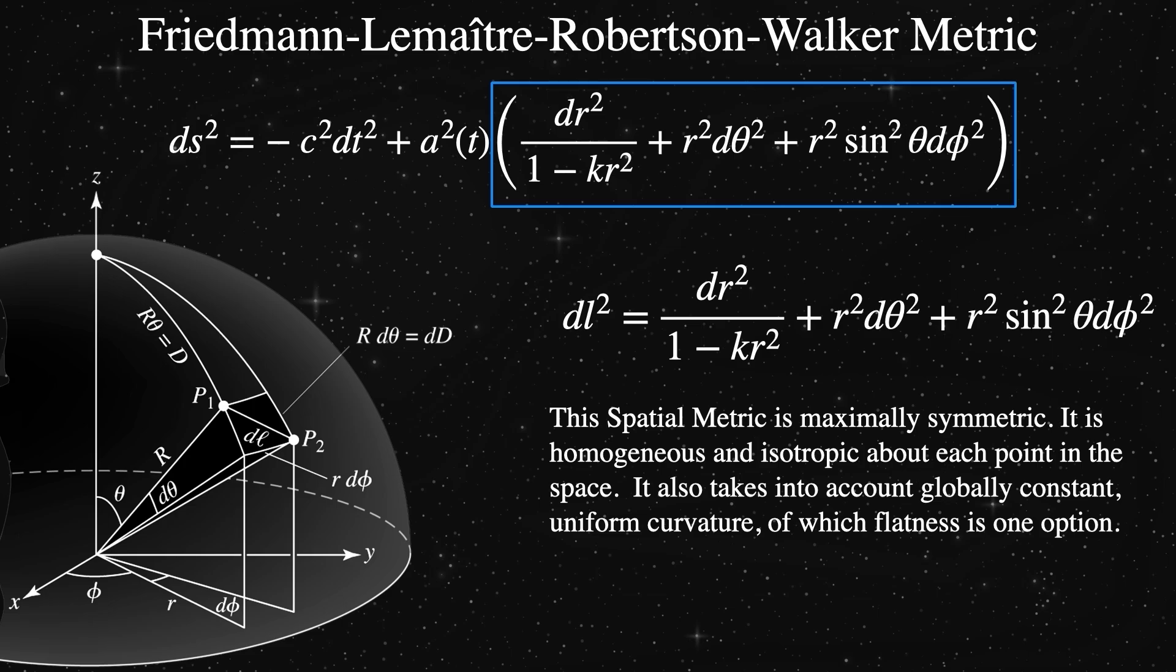Next, we've allowed the flat spacetime to also have a uniform curvature, which is encapsulated in the denominator for the dr squared component.